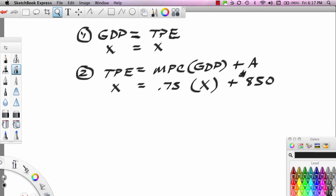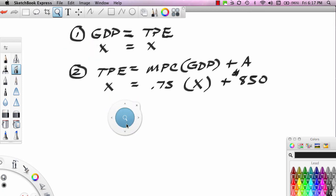It looks like we can't solve this, but we can. This is one equation with one variable. It looks like we have two variables, but we don't have two unknowns. We don't have two unknowns. We only have one unknown, because we're assuming that GDP, because GDP equals TPE, we can set them equal to the same variable. So let's go ahead and solve this.